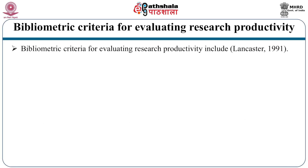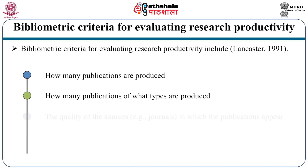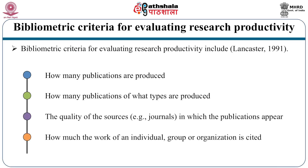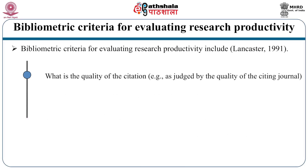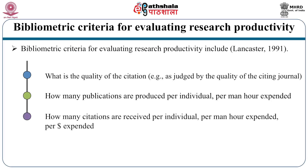Bibliometric criteria for evaluating research productivity include: (1) how many publications are produced, (2) how many publications of what type are produced, (3) the quality of the resources in which publications appear, (4) how much the work of individual, group or organization is cited, (5) what is the quality of the citation, (6) how many publications are produced per individual per man-hour, and (7) how many citations are received per individual per man-hour.